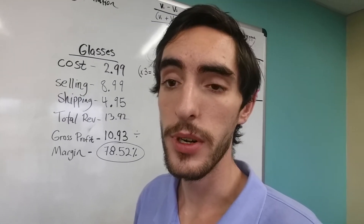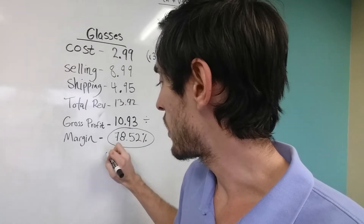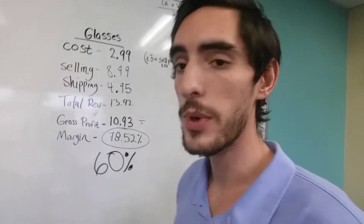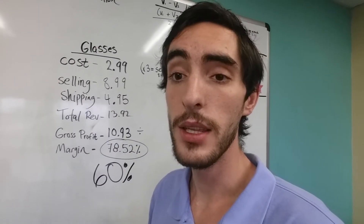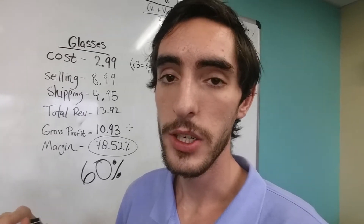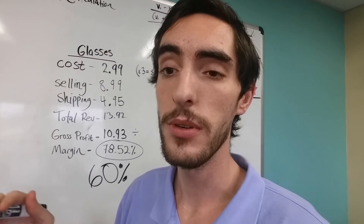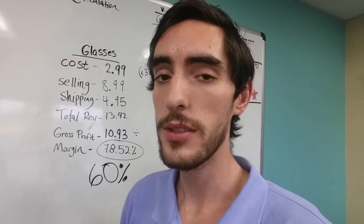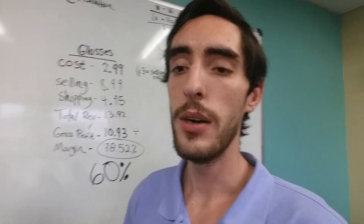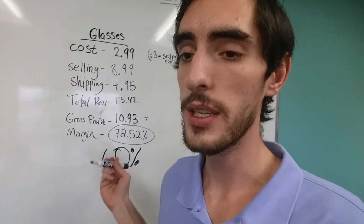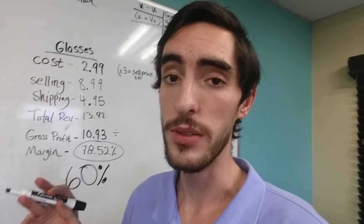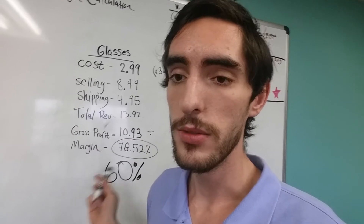What's a good margin to aim for? We were taught by John that you want to be at at least 60%. 60% allows you to factor in your advertising costs, so your margins go from 60% down to around 40%. That means for every $100 you spend on ads, you're making $140, so that's why it's so important to get this margin up to 60%.